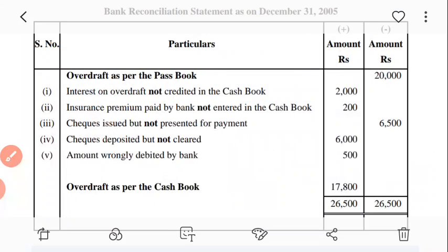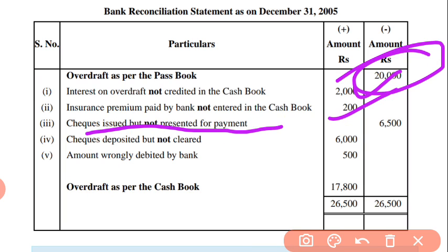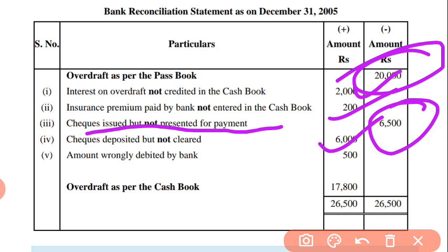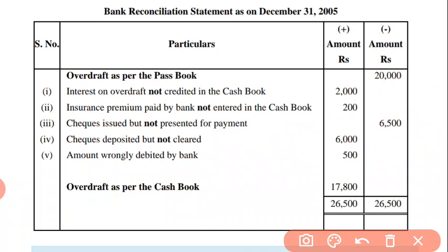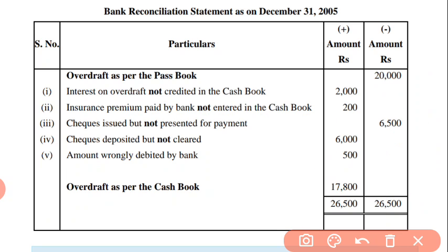Now see the solution. Interest on overdraft is plus. As you know, overdraft will remain minus. After that, insurance premium is also plus. Check issued but not yet presented for payment — this will be minus. Check deposited but not yet credited is a minus item in the cash book, so it will be plus here because we are preparing as per passbook. Amount wrongly debited will also be a plus item. The sum of the credit side is 26,500 and the debit will be less. So the overdraft balance as per cash book will be 17,800.